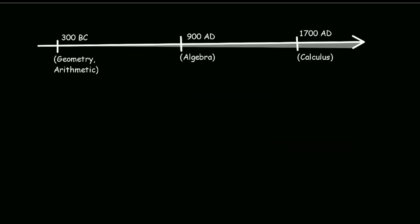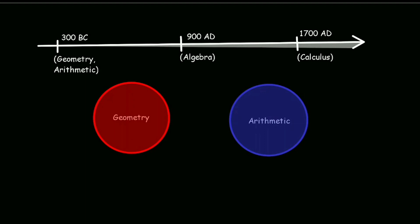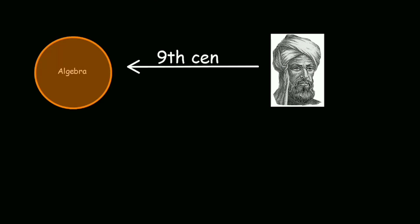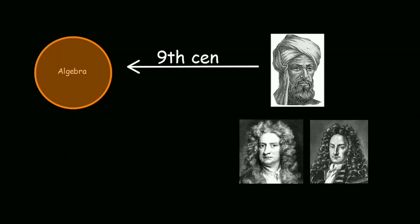From ancient times mathematicians were working on different branches of mathematics such as geometry and arithmetic. During the 9th century, Ibn Musa al-Khwarizmi founded the branch of mathematics named algebra. During the 17th century, Isaac Newton and Gottfried Leibniz individually introduced the idea of calculus. But even after all those mathematical developments, something was really missing.